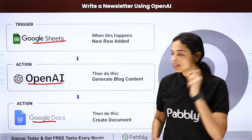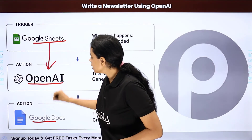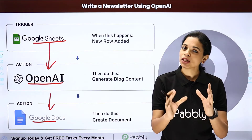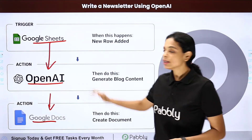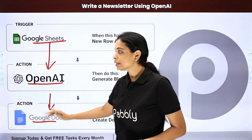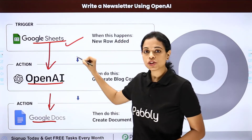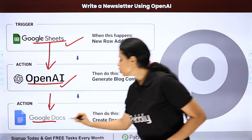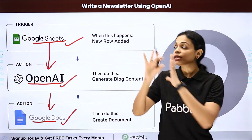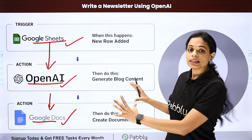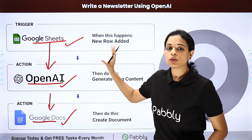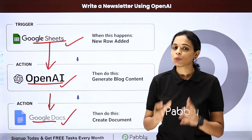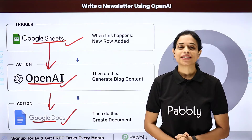Now how can you do that? For this, you will have to integrate these three applications, and the same can be done using Pabbly Connect software. These three applications would be integrated. Your trigger application would be Google Sheets, your action application would be OpenAI, and another one would be Google Docs. This entire process will be set up, integrated, automated, and you can do it yourself.